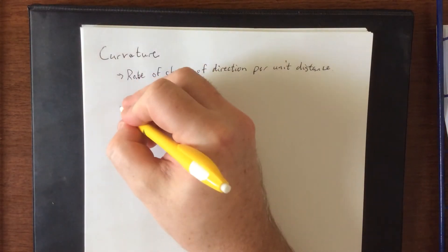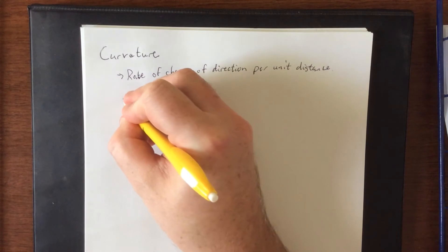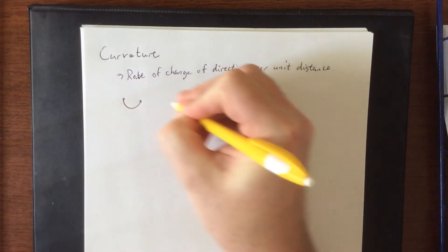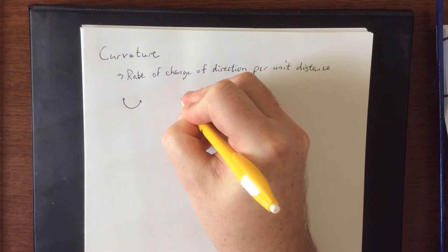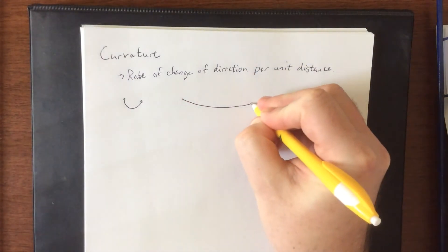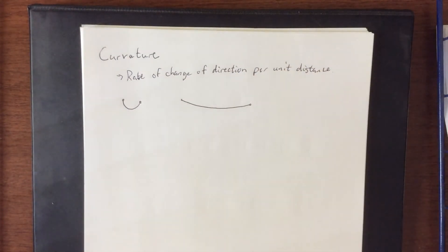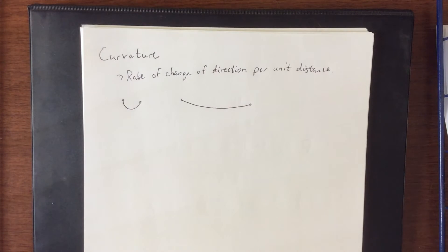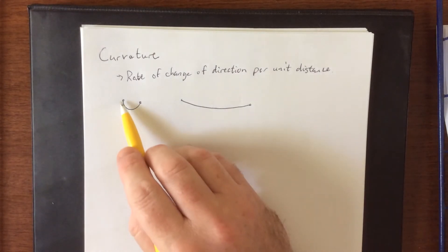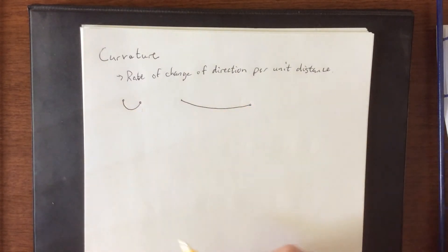For example, if I make a curve like this versus making a curve like this, one of these is defined as being curvier than the other one. The one that tends to be perceived as curvier is the one where we have a larger change in direction per unit arc length or per unit distance traveled.